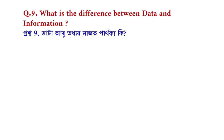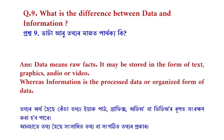Question number 9: What is the difference between data and information? Data means raw facts and it may be stored in the form of text, graphics, audio, or video. Whereas information is the processed data or organized form of data.